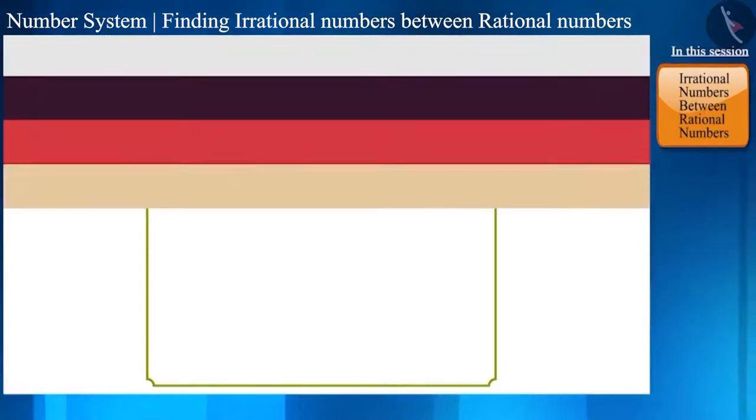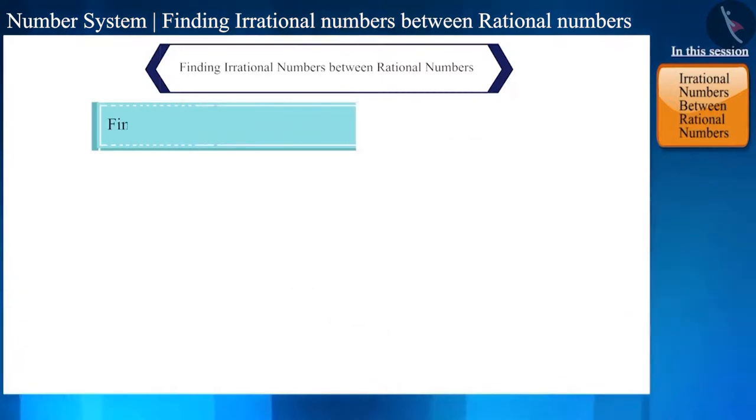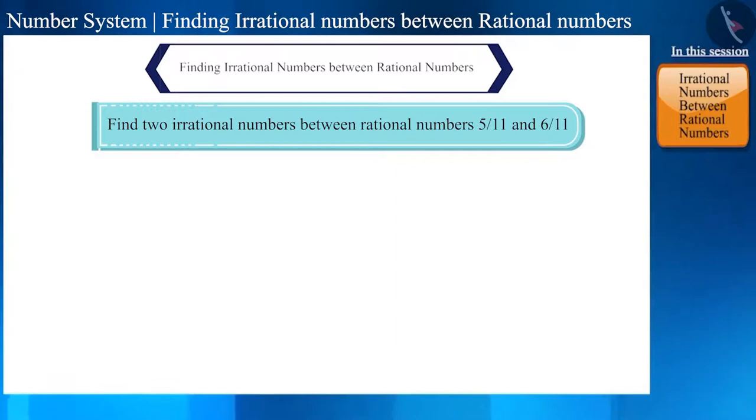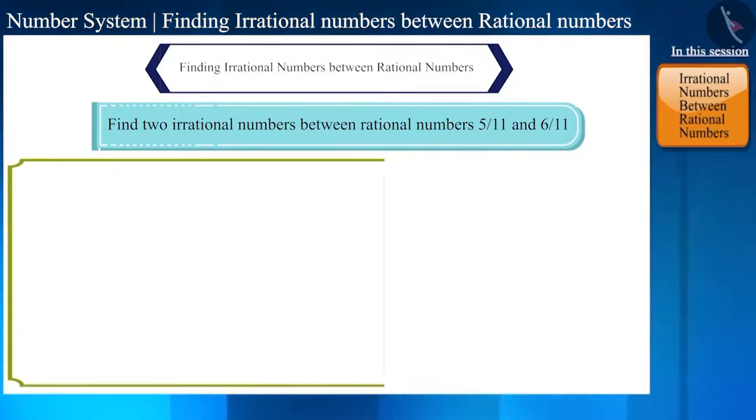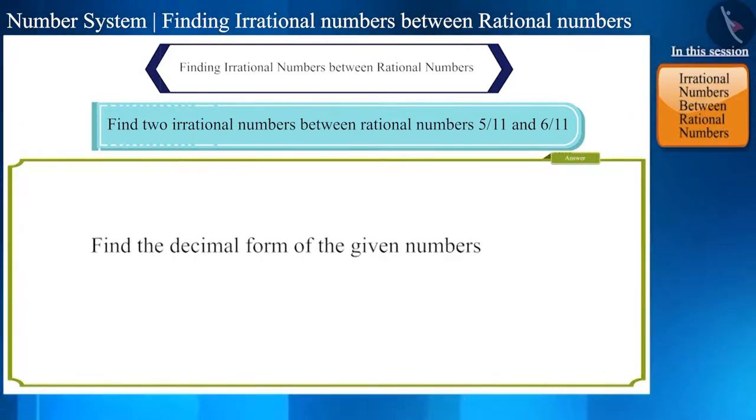Let us take another example. Find two irrational numbers between rational numbers 5 by 11 and 6 by 11. How will you answer this question? Here, first we will find the decimal forms of these rational numbers and then, keeping them in mind, we will write two irrational numbers.